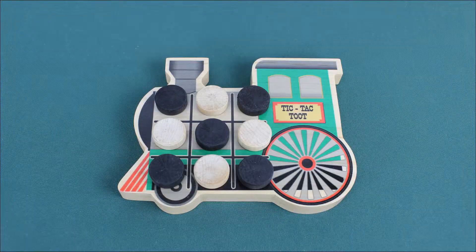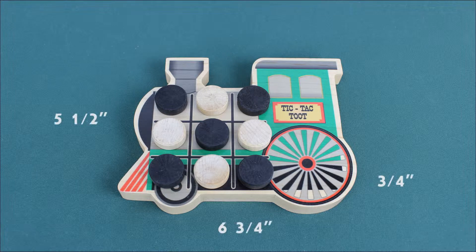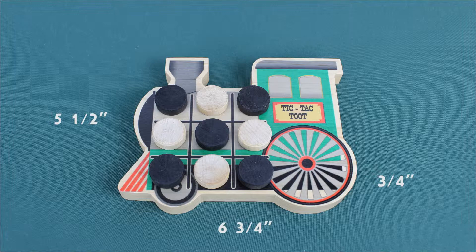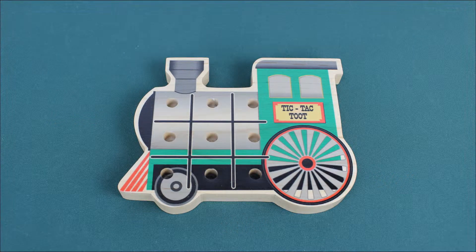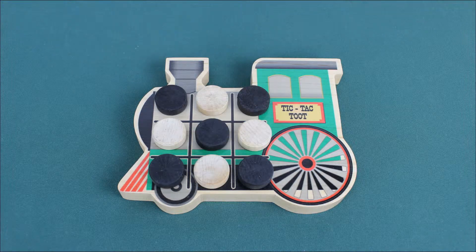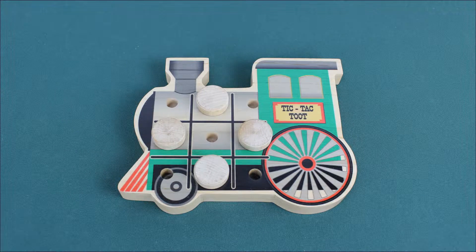Third is the tic-tac-toot. Made of hard maple, this train engine shaped board measures 6 3/4 inches wide, by 5 1/2 inches long, by 3/4 inches thick. The board and train details are printed on the front. This board comes with 9 black and natural pegs, 5 of one color and 4 of the other.